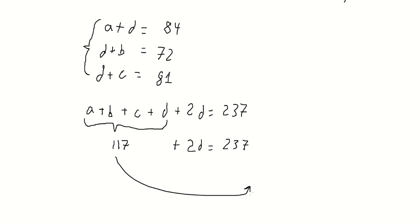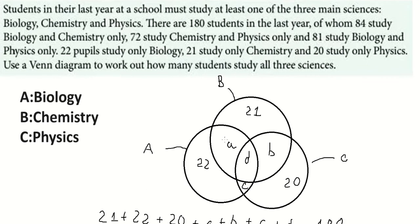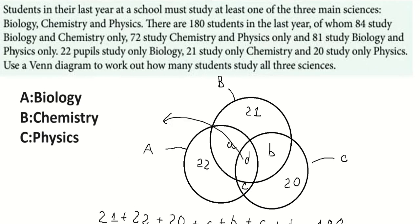Substituting and rearranging, we get 120 on the right side. Dividing both sides by 2, we find D equals 60 students. So the number of students studying all three subjects is 60. That's the end — thank you for watching.